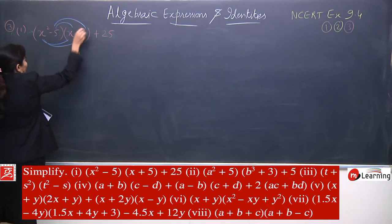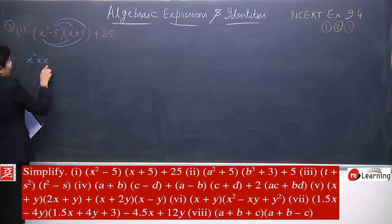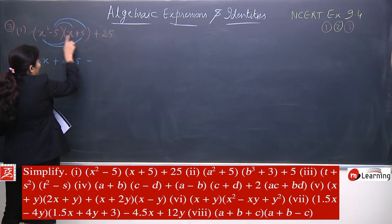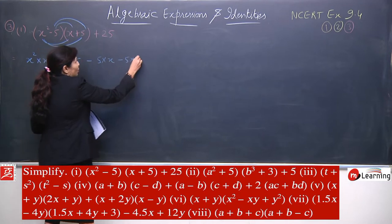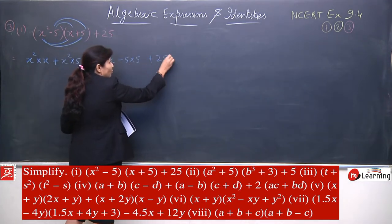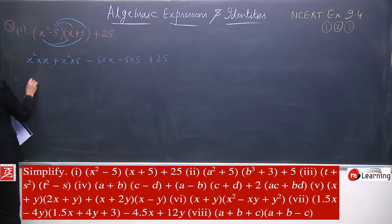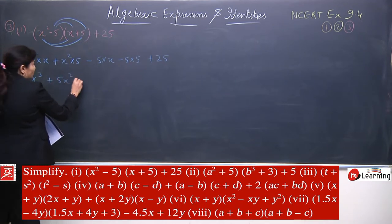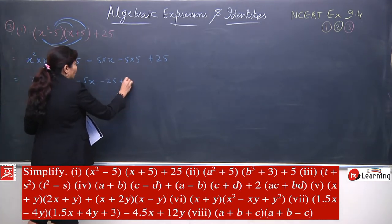We can do it directly. So x square multiplied by x — first term — plus x square multiplied by 5 — second term. Now minus 5 will multiply by x, minus 5 multiply by 5, and then 25 is also given. All the terms are done. Now we will solve: x cube plus 5x square minus 5x minus 25 plus 25.